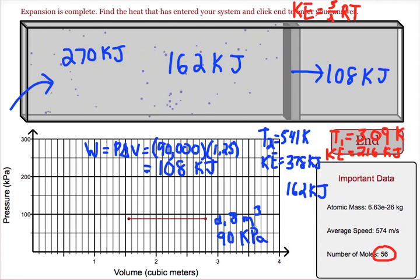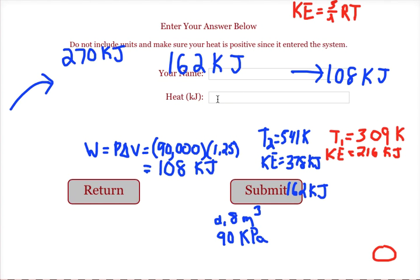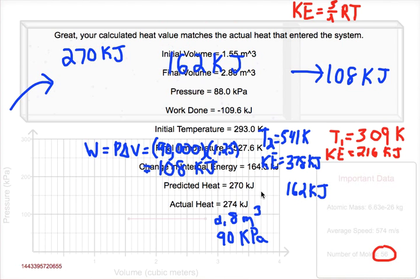To test that we did this right, we want to hit the end button. We want to put in our name, which we don't need to do for this demo, and then we want to put in the amount of heat in kilojoules and submit.